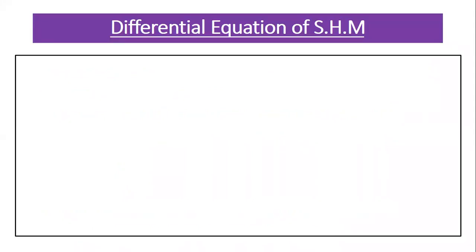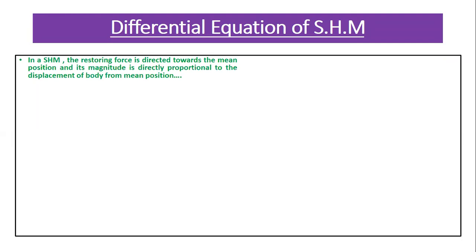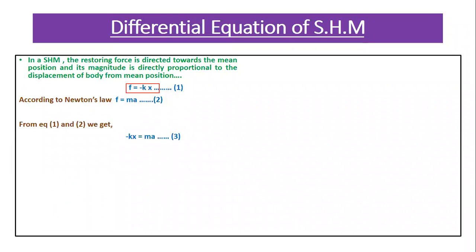Now we learn the differential equation of SHM. Simple harmonic motion may be classified into two types: linear SHM and angular SHM. Here we discuss linear SHM. For a body performing linear SHM, we write F = −kx. By Newton's second law, F = ma. Substituting, we get ma = −kx, so −kx = ma.